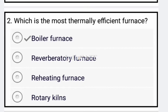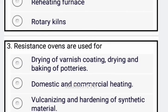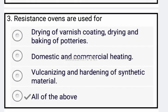Next: which of the following is the most thermally effective furnace? The boiler furnace is correct. Next: resistance ovens are used for all of these — option A: drying of coatings, drying, and baking of pottery; option B: domestic and commercial heating; option C: annealing and hardening of synthetic materials. So all of these are the correct answer.